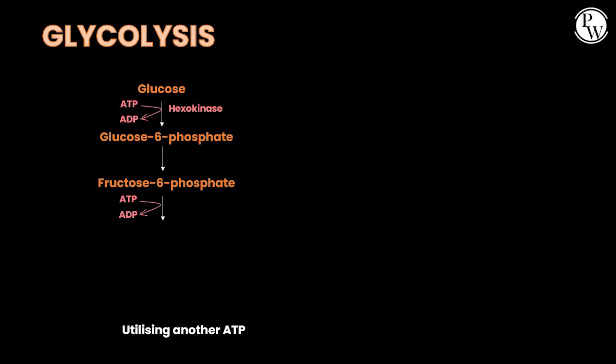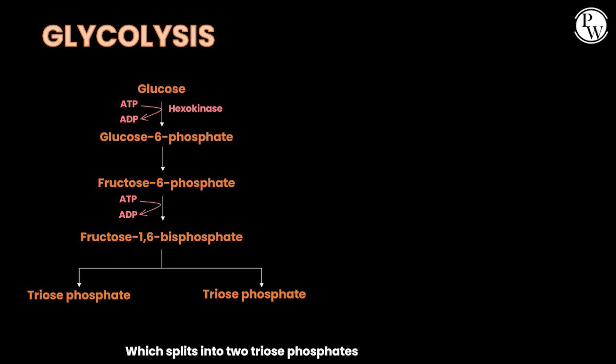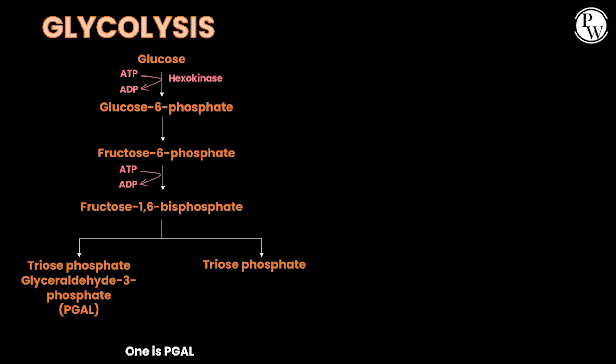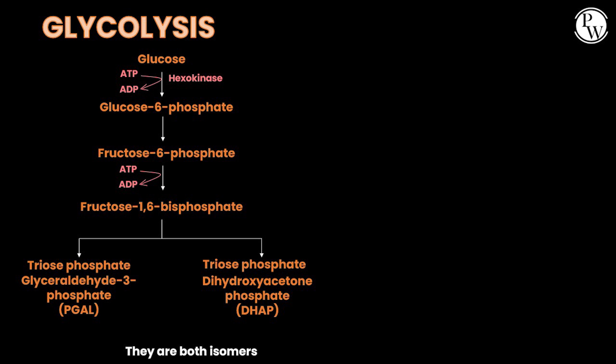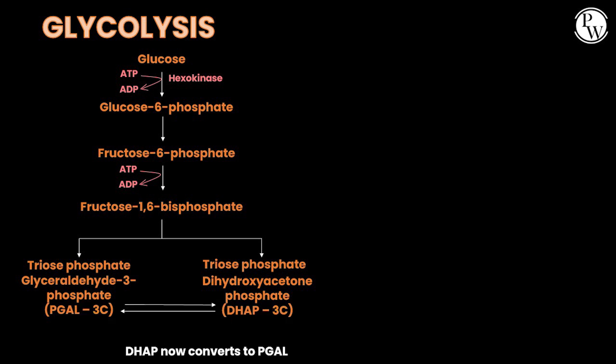Utilizing another ATP, forming fructose-1,6-bisphosphate, which splits into two triose phosphates — one's PGAL, the other's DHAP. They are both isomers containing three carbons.